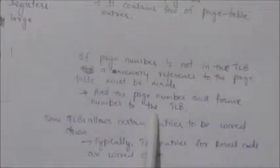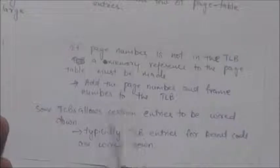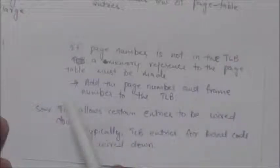If the TLB is already full of entries and there is no place to add this page number and frame number, the operating system must select one entry for replacement. Some TLBs allow certain entries to be wired down.